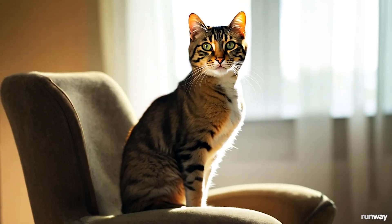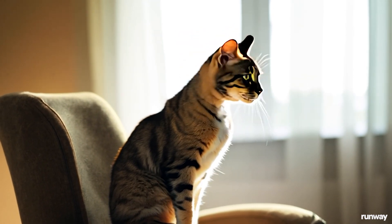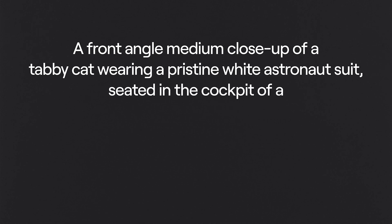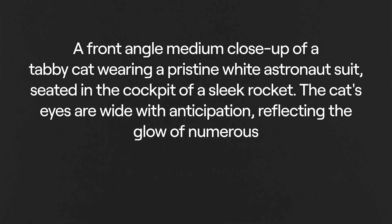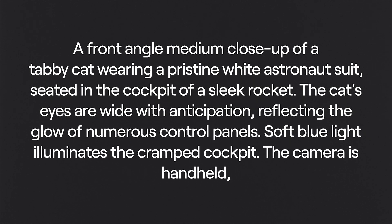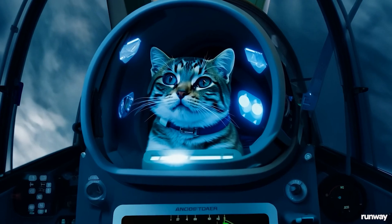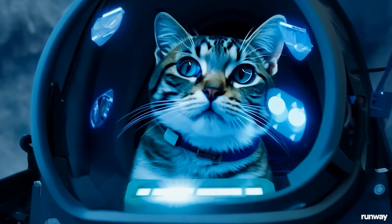When it comes to prompting inside Gen3 Alpha, the more descriptive and detailed you can be about what you're trying to create is obviously better, but it does work with very simple prompts too. For example, 'a cat' works great. But if I say something like: a front-angle medium close-up of a tabby cat wearing a pristine white astronaut suit, seated in the cockpit of a sleek rocket, the cat's eyes wide with anticipation reflecting the glow of numerous control panels, soft blue light illuminating the cramped cockpit, the camera handheld and slowly pushing in on the cat's face —